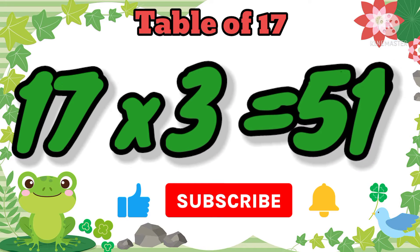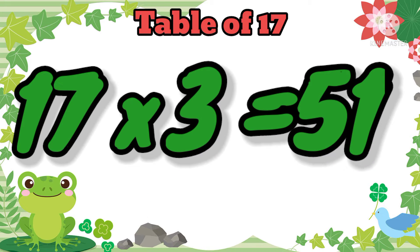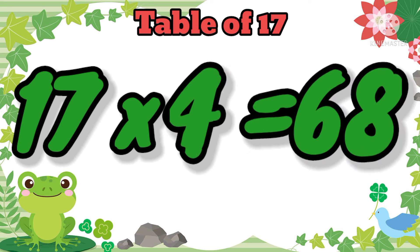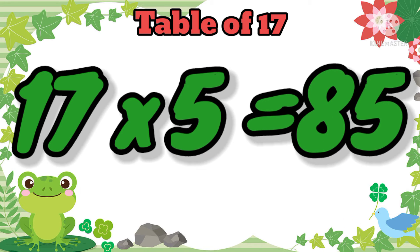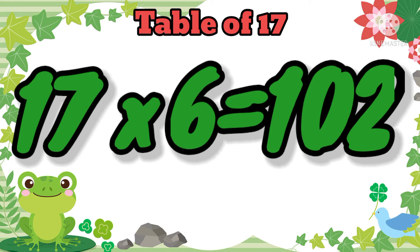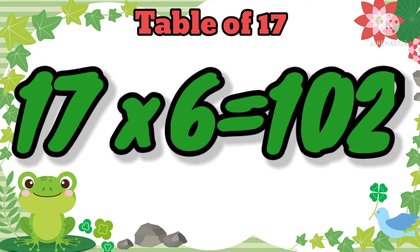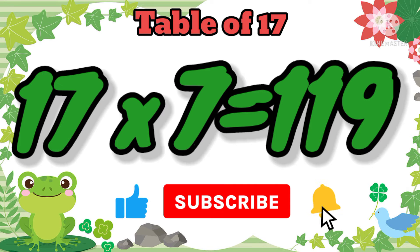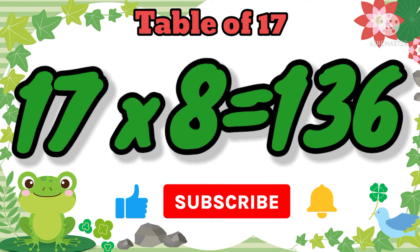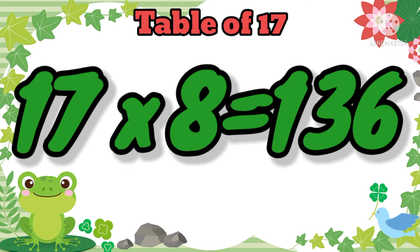17 threes are 51. 17 fours are 68. 17 fives are 85. 17 sixes are 102. 17 sevens are 119. 17 eights are 136.